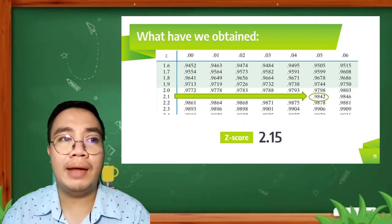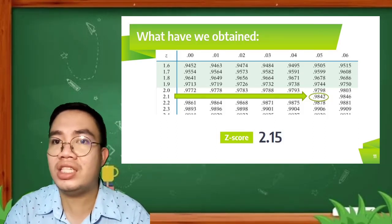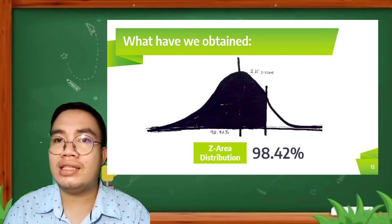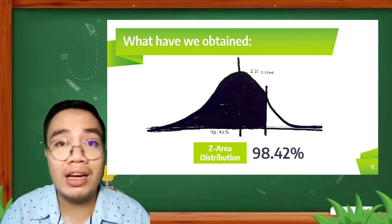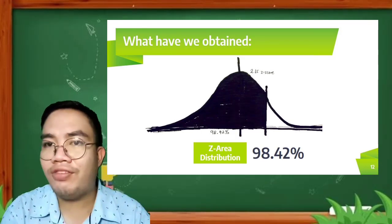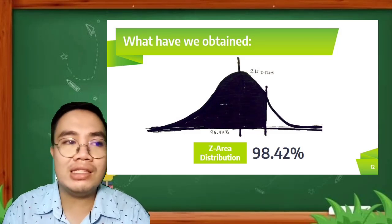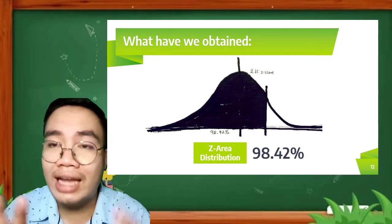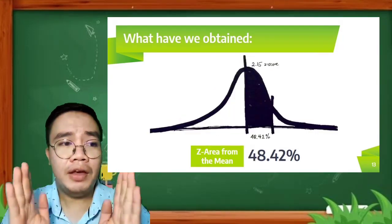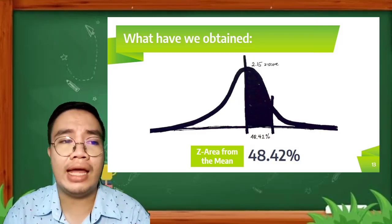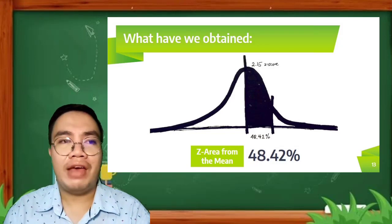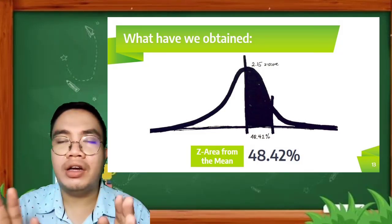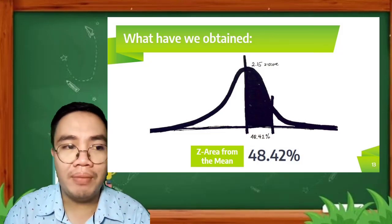To sum up in this problem, we have obtained the following values. Based on the DG Company problem that we have, the 2.15 is our Z-score. Then 98.42%, that is the Z-area distribution in the entire values or the entire table that we have, represented by that figure. From 0 to 2.15 Z-score, it will give us 98.42%. What is the implication? That means 98.42% of the data falls on that area. Then lastly, 48.42% after subtracting 50%, we got the Z-area from the mean of our values. That is how far the score or the value that we have earlier based on the problem is from our mean.